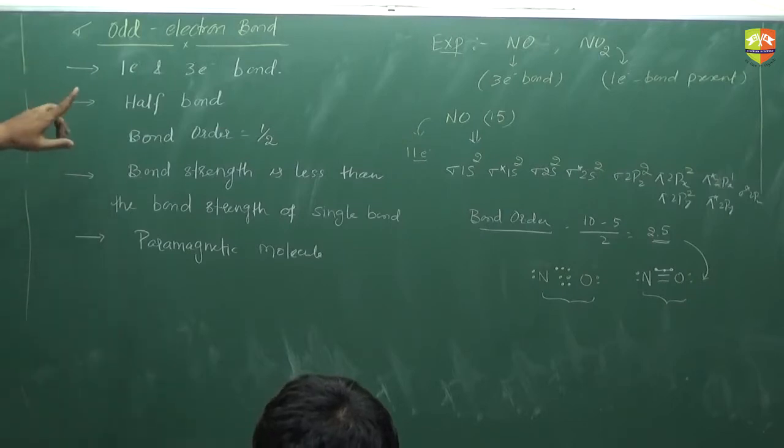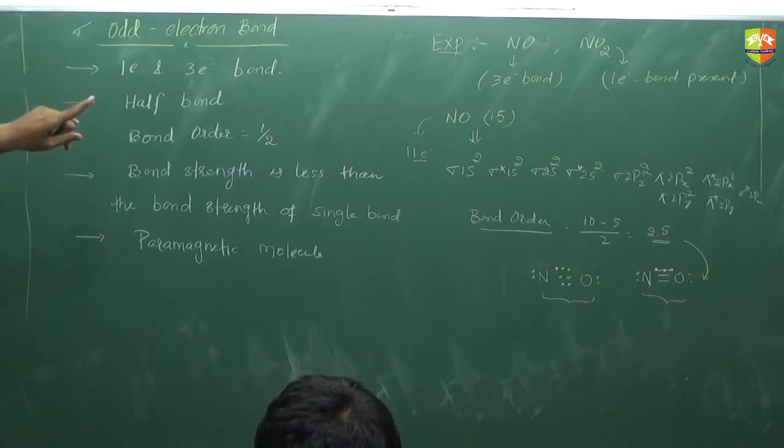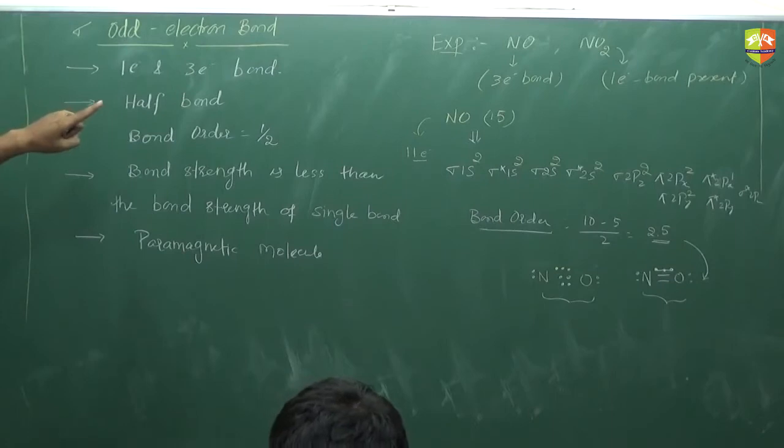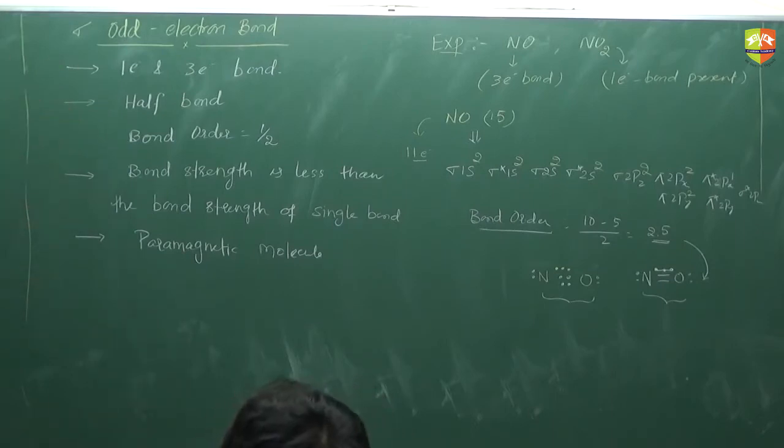Odd electron bond is very rare. The two examples are NO and NO₂. In NO₂ we have a 1-electron bond, and in NO we have a 3-electron bond. Only these two you need to remember.